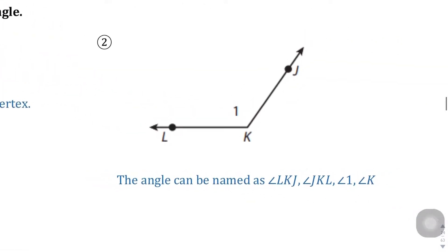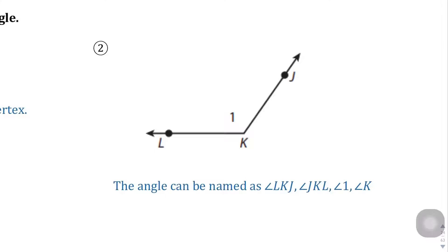Question number 2, this angle can be named as LKJ, JKL, Angle 1, Angle K. They kind of provide the answers there for you, but I just wanted to draw your attention to the fact that there's four different ways you can name this angle. Notice that K is in the center of these two versions of the naming convention, and even Angle 1 and Angle K are there because they are at the vertex of that angle.